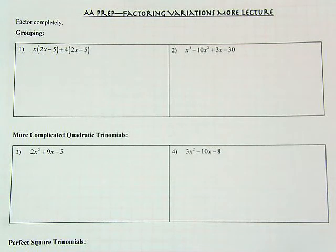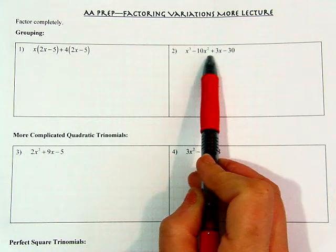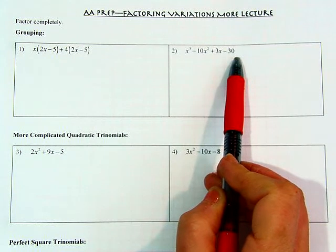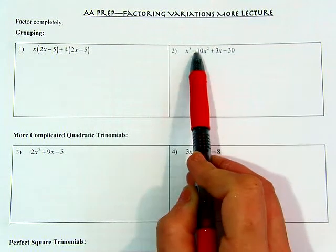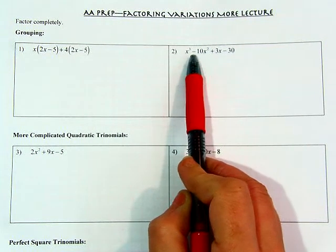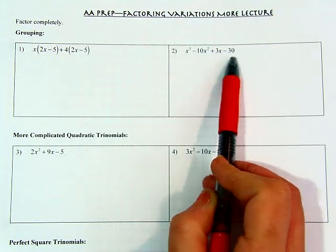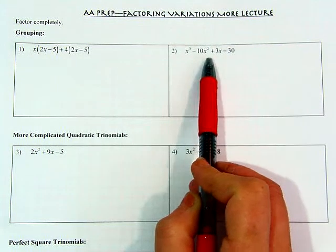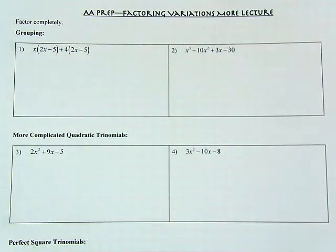So first we're looking at grouping, and grouping is a technique that we really use for problems that look like this. Whenever we have four terms and it's cubic — a cubic polynomial could be more than that, that's fine — this is just a strategy we use to break it down as products of factors instead.